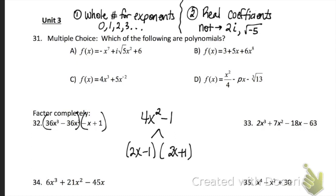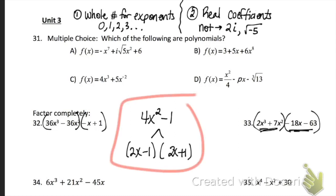Problem 33 is the same — group the first two, group the last two, pull out a GCF from the first parenthesis and from the second, and rewrite it. Again, watch for a difference of squares.